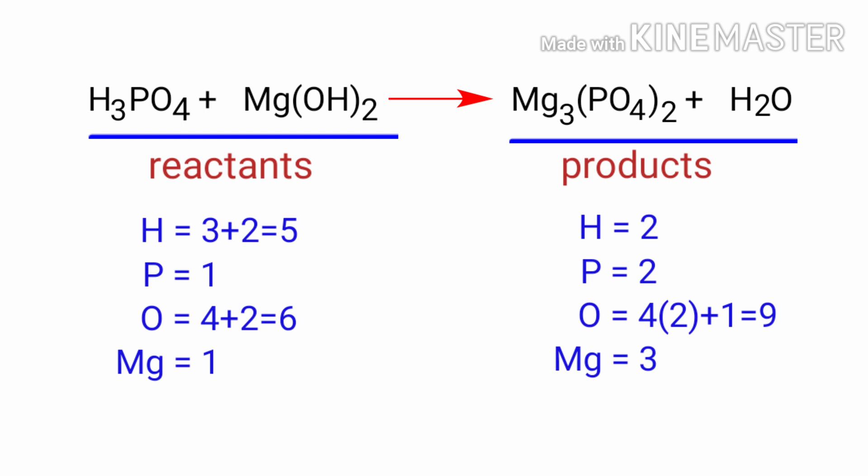To balance the chemical equation we need to make use of coefficients. A coefficient is a number that we place in front of a chemical formula. In this equation we need to balance the phosphorus atoms first. To do this we need to put a coefficient of 2 in front of H3PO4.